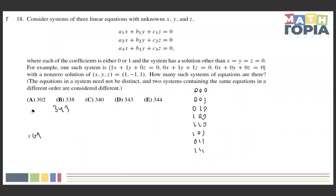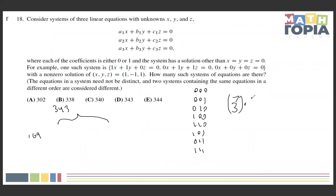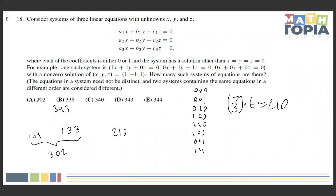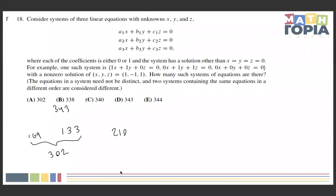Within those 343 systems, we count how many have at least two identical equations. The number with all three triplets distinct is 7×6×5 = 210. So the number with at least two the same is 343 − 210 = 133. Adding the two cases that always work: 169 + 133 = 302, which is already answer choice A. But we still need to check whether all 210 all-distinct systems fail to have a non-trivial solution.